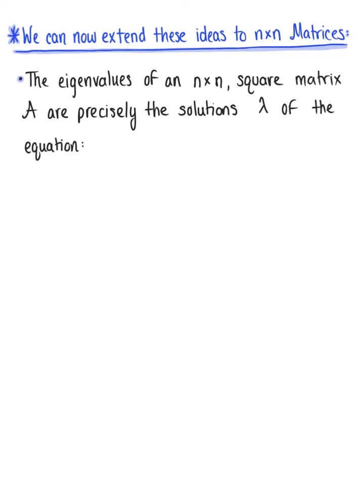The eigenvalues of an n by n square matrix A are precisely the solutions lambda of the following equation: the determinant of A minus lambda times the n by n identity matrix equals 0.